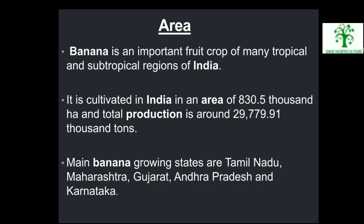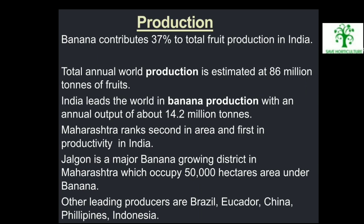Area: Banana is an important fruit crop of many tropical and subtropical regions of India. It is cultivated in India in an area of 830.5 thousand hectares and total production is around 29,779.91 thousand tons. Main banana growing states are Tamil Nadu, Maharashtra, Gujarat, Andhra Pradesh and Karnataka. Production: Banana contributes 37% to total fruit production in India. Total annual world production is estimated at 86 million tons. India leads the world in banana production with an annual output of about 14.2 million tons. Maharashtra ranks second in area and first in productivity in India. Jalgaon is a major banana growing district in Maharashtra, occupying 50,000 hectares under banana. Other leading producers are Brazil, Uganda, China, Philippines, and Indonesia.